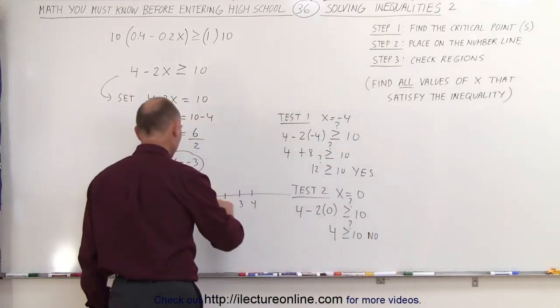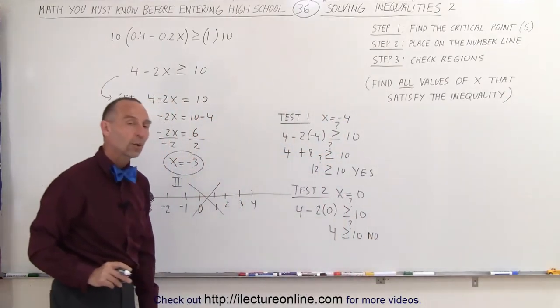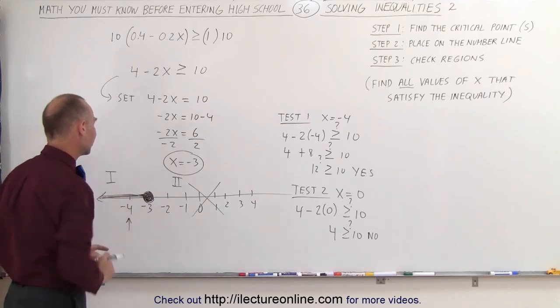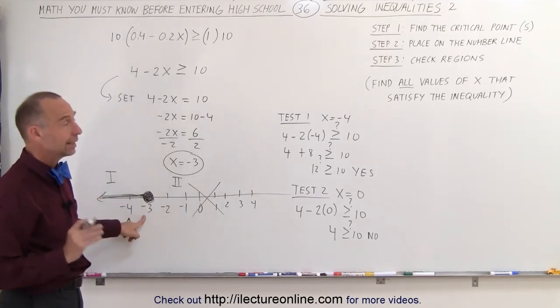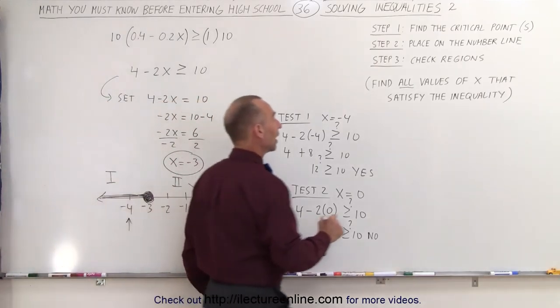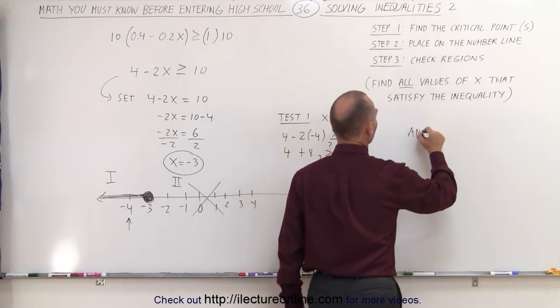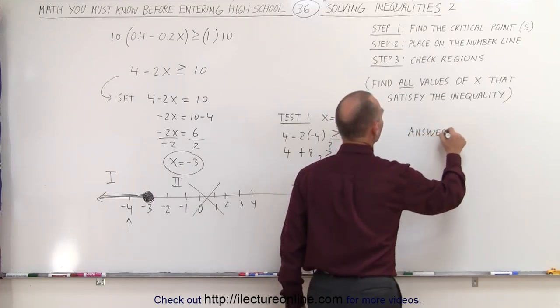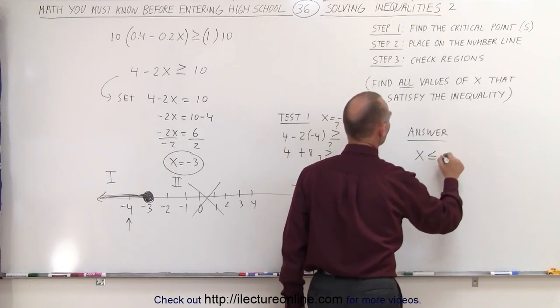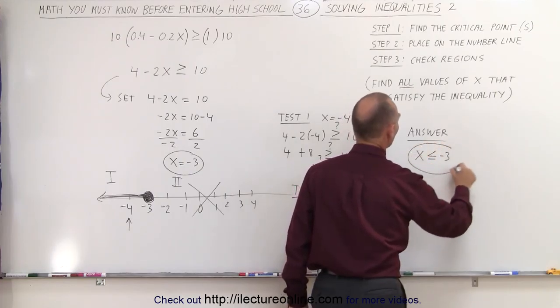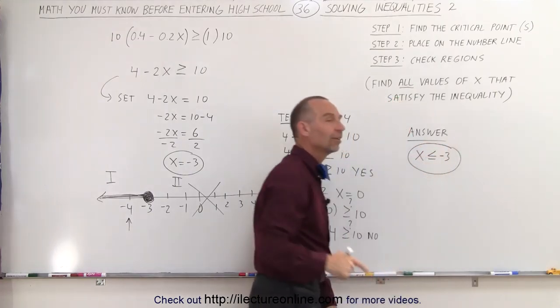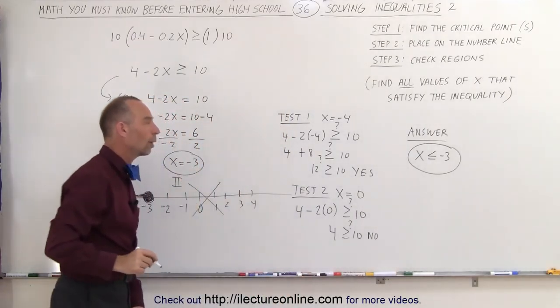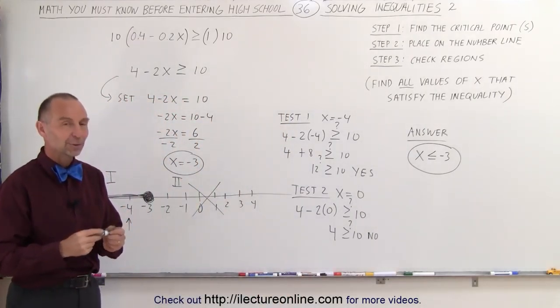Which means none of these points satisfy the inequality. Only the points to the left of -3, including -3. Which means the answer can simply be written by stating that x must be ≤ -3. And all x's that satisfy this satisfy the original inequality. And that's how we do that.